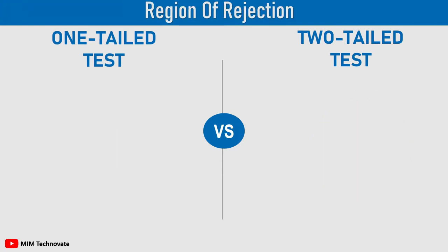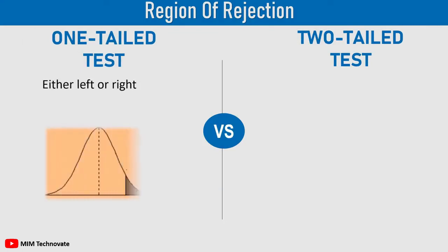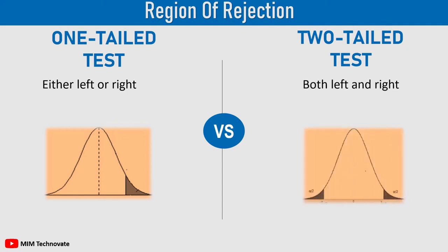In a one-tailed test, the region of rejection is either on the left or right of the sampling distribution, while in a two-tailed test, the region of rejection is on both sides of the sampling distribution.